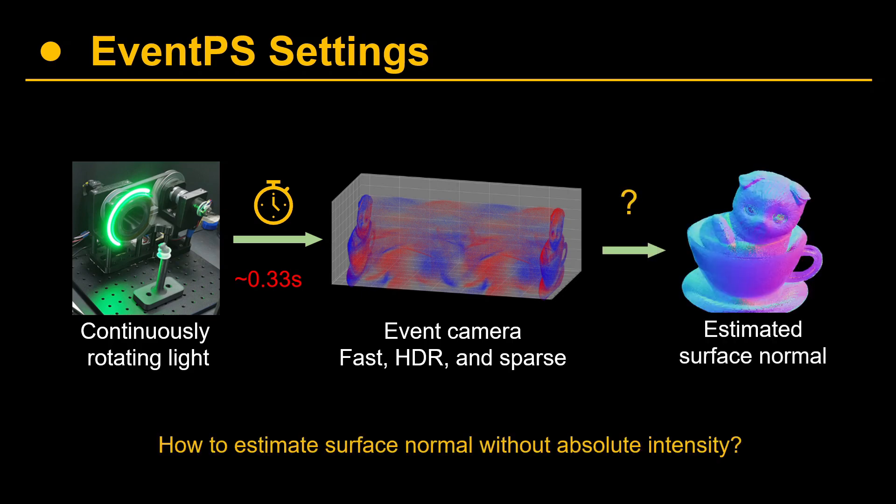However, the Event Camera only records the intensity changes, while all current photometric stereo algorithms require absolute intensity values. How to estimate the surface normal with only intensity changes is a key challenge for EventPS.